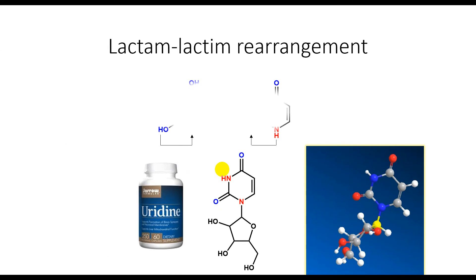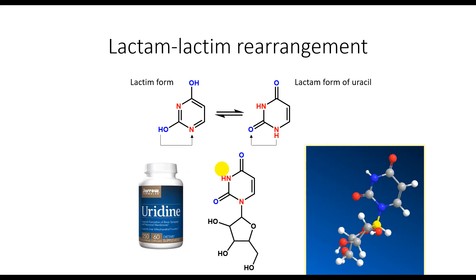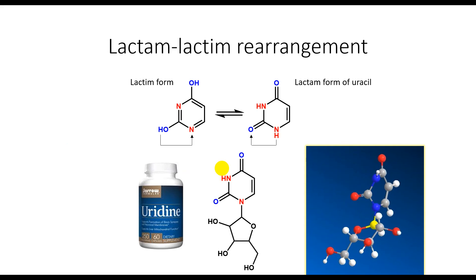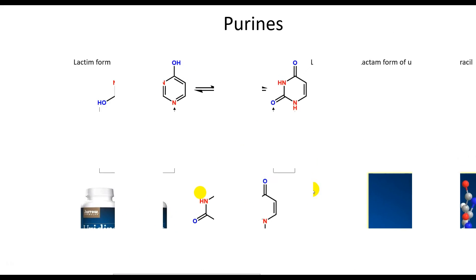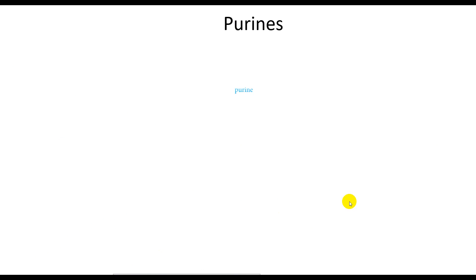The lactam-lactim tautomerism: these compounds exist in two tautomeric forms. Only the lactam forms can be glycosylated to give nucleosides. The purines are another biologically important class of fused-ring heterocycles. They contain a pyrimidine ring fused to an imidazole ring.